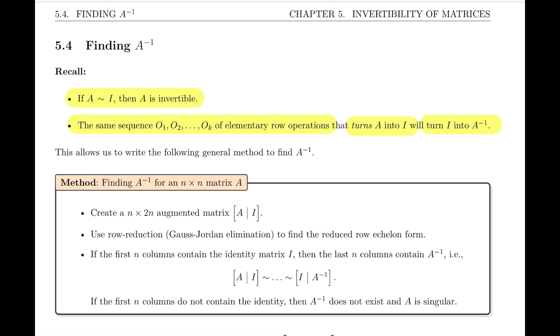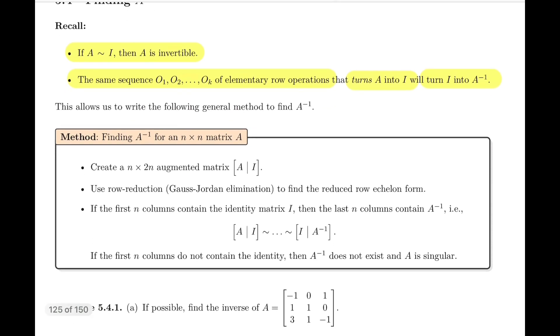Both these remarks allow us to write the method that we placed in this box. Let's read it together. Finding A inverse for an n-by-n matrix: First step is we create an n-by-2n matrix, A|I.